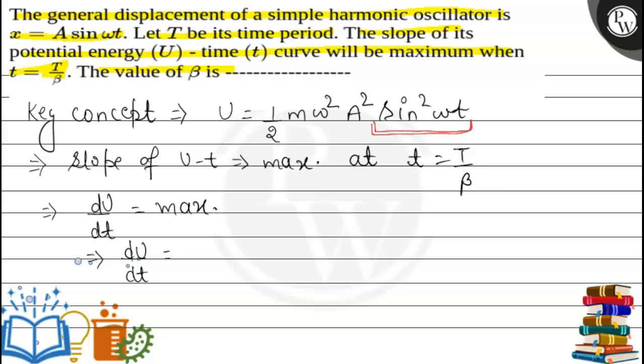This depends upon time. Then 1/2 m ω² A² remains constant. Then the derivative of this term becomes 2 sin ωt. Now this quantity becomes 2 sin ωt.